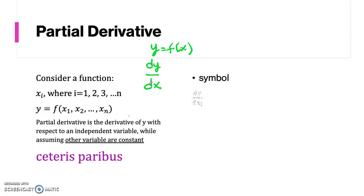instead of using dy over dx, we use the symbol dou y over dou xi. So this Greek letter delta is read as dou. So we are deriving this function with respect to one independent variable, xi.